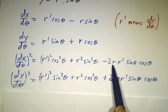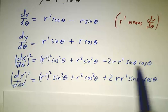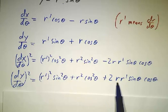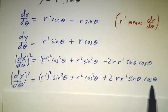The cross term that you get from dx dθ is minus 2rr' sin θ cos θ. And the thing you get from dy dθ is plus 2rr' sin θ cos θ.